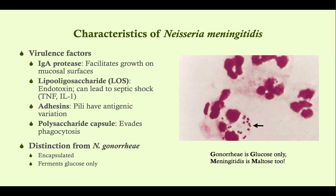Adhesins include both pili and fimbriae, and they have antigenic variation. Why is that important? Because we can't use those to create a vaccine — there are just too many combinations. So if you get a Neisseria meningitidis or Neisseria gonorrhea infection, you can get it again and again, because antibodies against one strain won't protect you when a new infection has different antigens on the pili. That antigenic variation helps the organism evade the immune system through repeated bouts of infection.